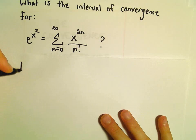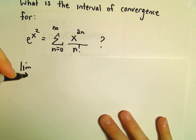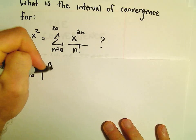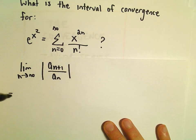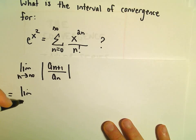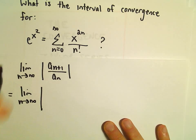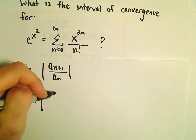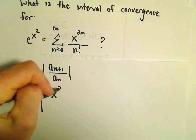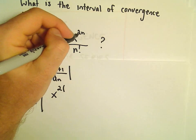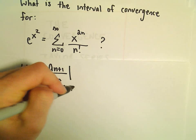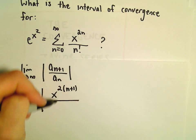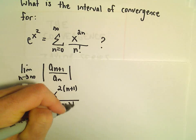So the ratio test again says we look at the limit as n goes to infinity of a sub n plus 1 over a sub n. So in this case we've got the limit as n goes to infinity. So everywhere there's an n, I'm going to replace it with n plus 1. So we'll have x raised to the second times n plus 1 over n plus 1 factorial.